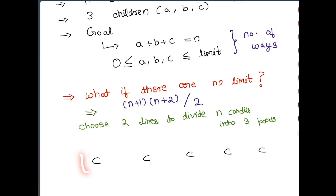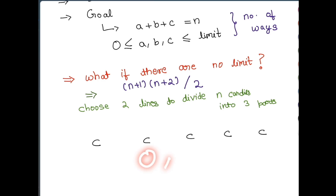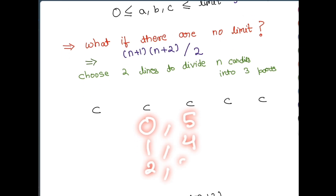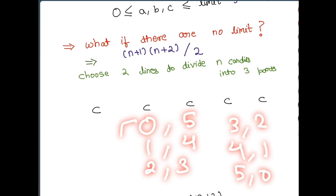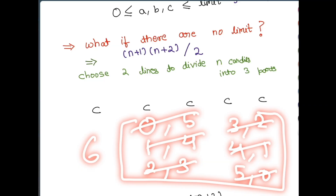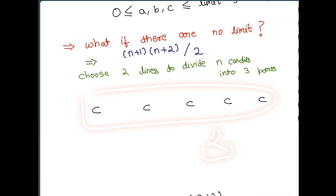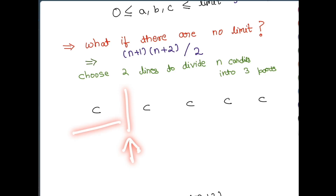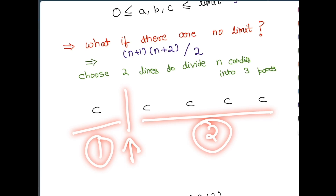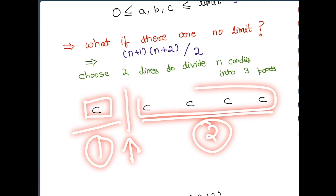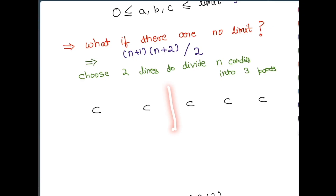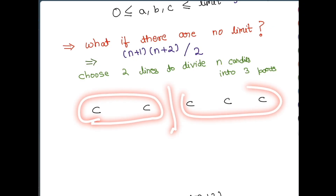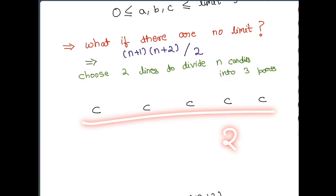If there are 2 children you can give (0,5), (1,4), (2,3), (3,2), (4,1), or (5,0) — that's 6 ways to distribute 5 candies among 2 children. We can think of this as placing a dividing line: a line here means all candies to the left go to child 1 and all to the right go to child 2. To divide into 3 parts you need 2 lines. For example putting lines at positions 1 and 4 gives child 1 one candy, child 2 three candies, and child 3 one candy.